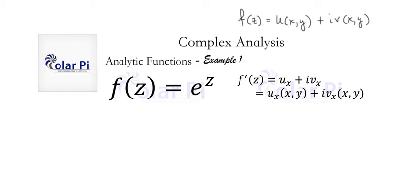Alright, let's get started. So to start, we can rewrite f of z as e to the x plus iy, where we note that z is x plus iy, and then by exponent rules, we can write this as e to the x times e to the iy.